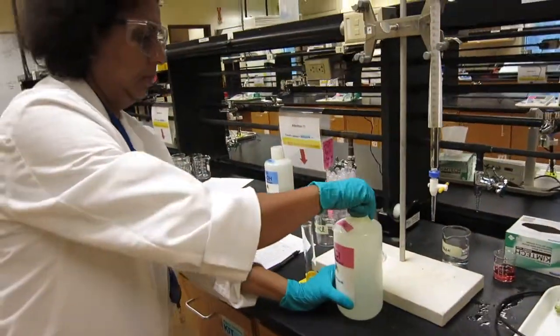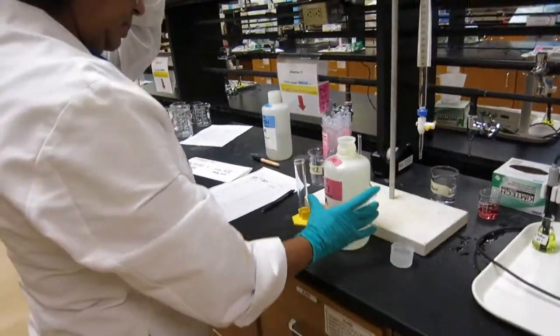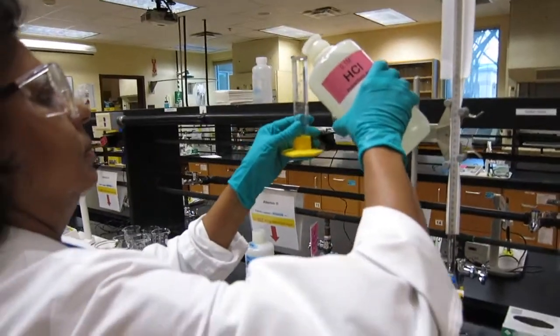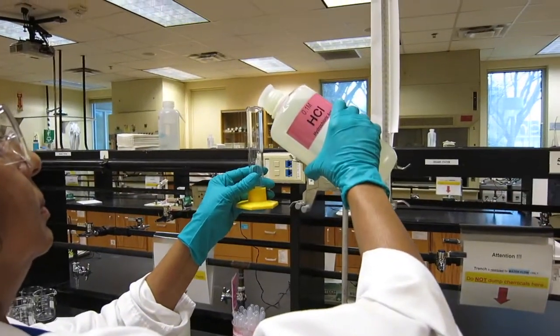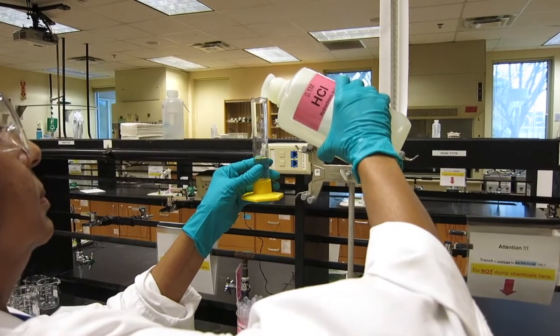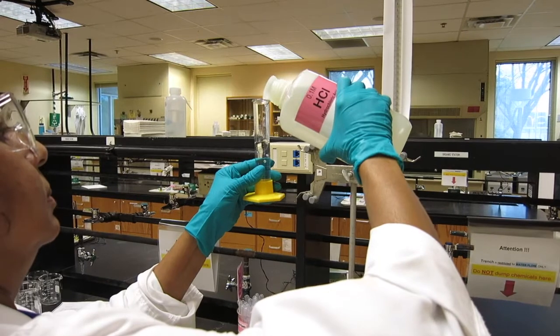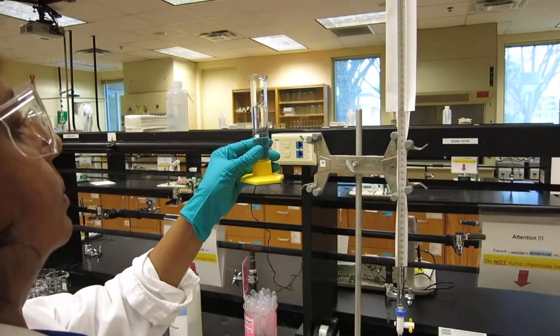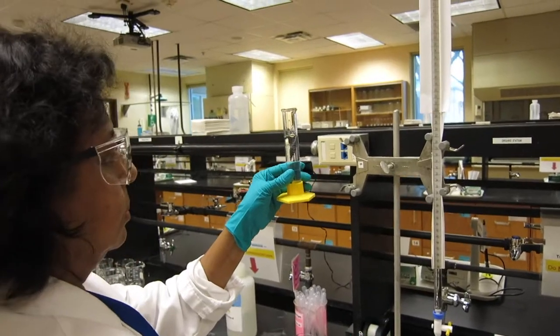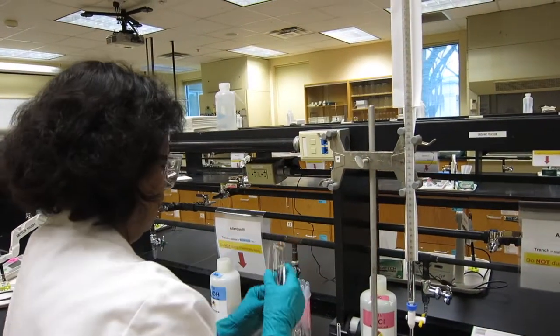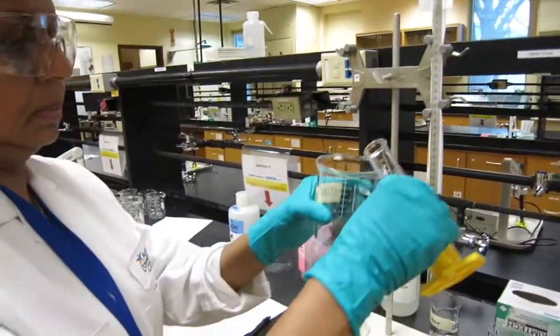Now we're going to pour the 0.1 molar HCl. We're going to measure 25 mL into the graduated cylinder and transfer it into a beaker.